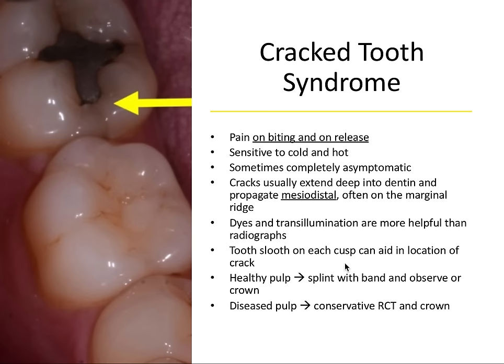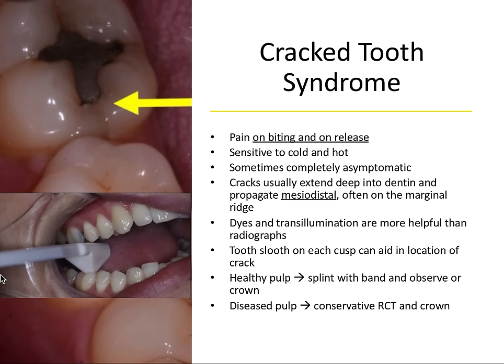Cracks usually extend deep into dentin and propagate mesiodistally, often on the marginal ridge of a posterior tooth. Dyes and transillumination are more helpful than radiographs, because radiographs can easily miss this crack, which occurs along one plane. You can also use a tooth sleuth on each cusp — placing the rounded tip on each cusp and having the patient bite down to locate which cusp is bothering them. If the pulp is healthy, you can splint the tooth with an orthoband and eventually crown it. If the pulp is diseased, conservative root canal treatment and restoration with a crown is recommended.